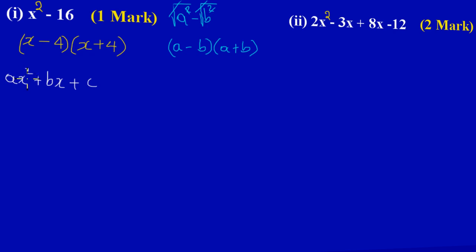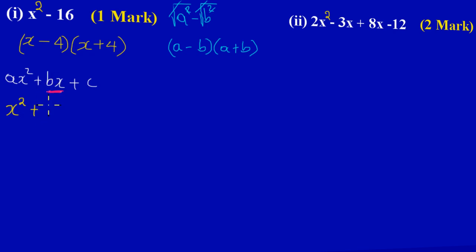We have a term in x squared at the front, then a term in x in the middle, and then the constant c at the end. If you look carefully at the problem — x squared minus 16 — we didn't get an x term; the middle term was missing. So we could use zero to represent that. I can write: x squared, and since I didn't have a middle term I use zero for b — zero times x is zero — then my minus 16.